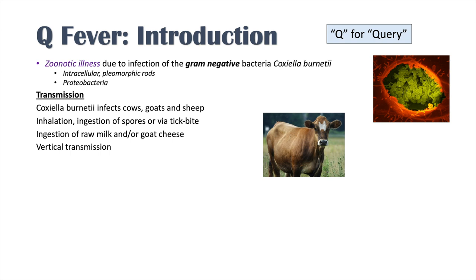In certain instances, an individual who is pregnant and has infection of Coxiella burnetti can actually pass it on through vertical transmission to their offspring — so vertical transmission from mother to infant can also occur. Interestingly, this bacteria is worldwide except for New Zealand, which does not appear to be affected by Q fever or Coxiella burnetti.